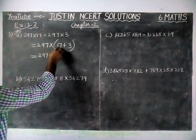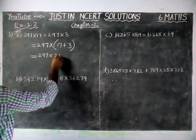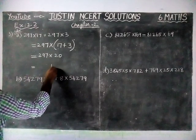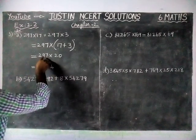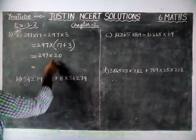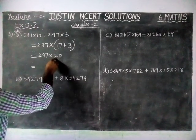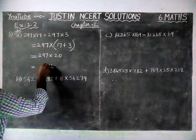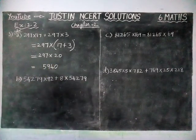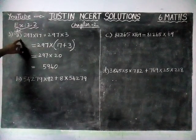So now we are going to find the answer. 297 into (17 plus 3) equals 297 into 20. Calculating: 2 twos are 4 plus 1 is 5, 9 twos are 18 plus 1 is 19 remaining 1, 2 twos are 4 plus 1 is 5, and we have a zero. So, 5940 is the answer for option A.